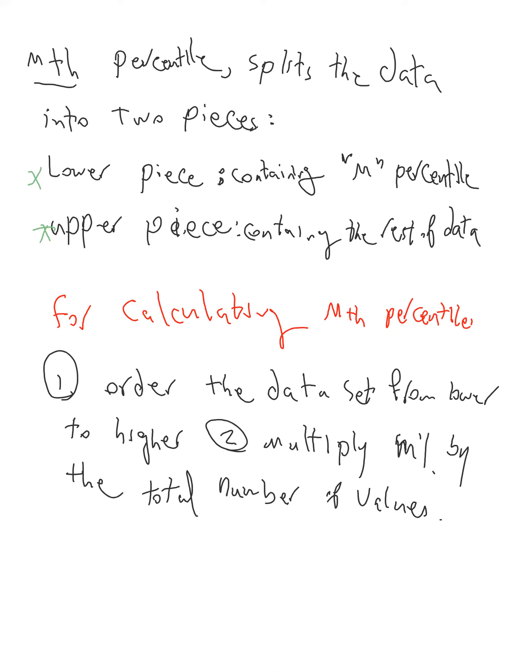For calculating the M's percentile, there are two steps we have to do with our data set. First we order the data set from the lower to higher, and second multiply the M percent by the total number of the values. Now I give an example in order to understand how to do that.